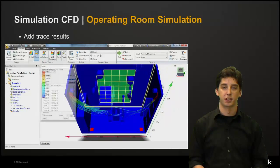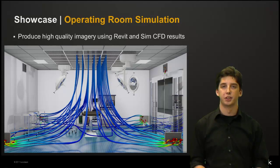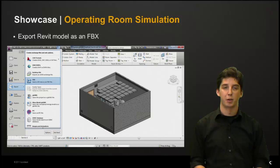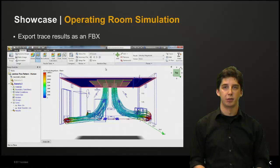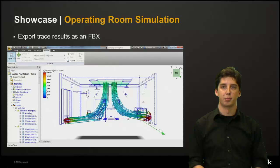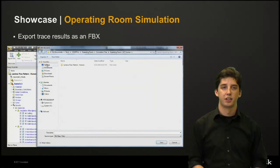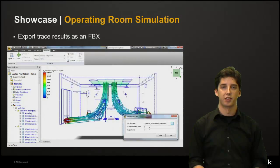We can feel free to add even more trace results if required. In the final part of our video we are going to utilize Showcase to grab both our Revit and Sim CFD results and produce high quality imagery. To start, go back into Revit and set the level of detail back to fine so we can grab all the detail in our Revit model, then export that as an FBX. Next, go to Sim CFD and change our view settings to outline and remove our planes since we just want the traces to export. Then go to the add-ins tab and select export FBX. Set a save path, choose a file name — we'll call it traces — then click save, and be sure to click save one more time to make sure we export our trace results.